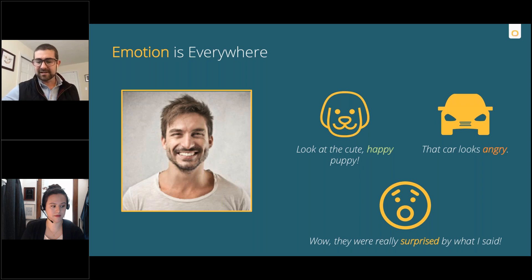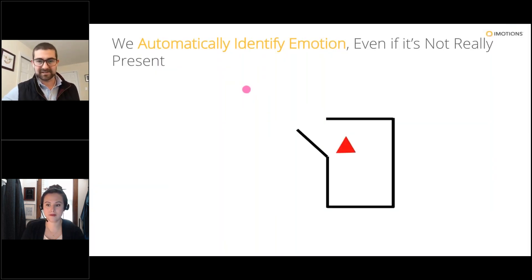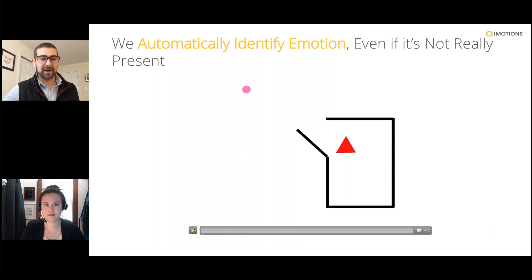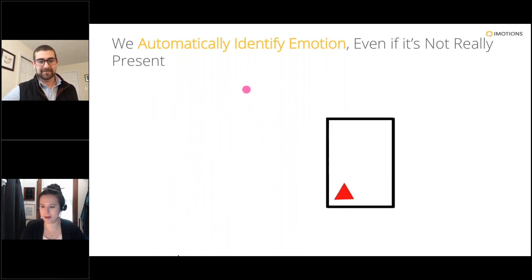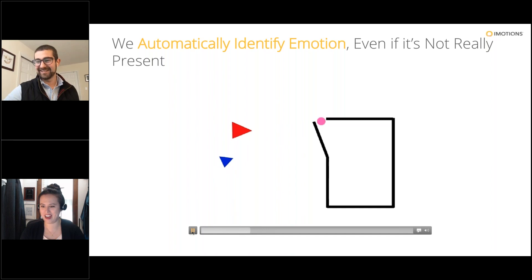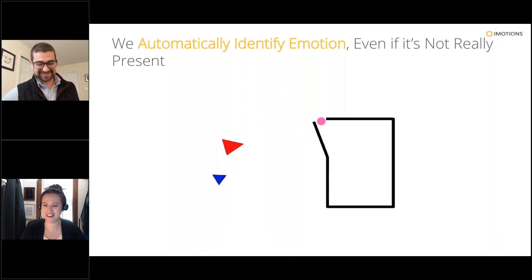We also do this automatically with very low-level stimuli. I'm going to show what's called the Heider-Simmel Illusion. Jessica, if you wouldn't mind narrating what it seems like is actually happening in this video. Jessica: So the red guy is trying to exit the box — it's trapped. The blue guy and the pink guy look like they're trying to help him get out. The blue guy is a lot more frantic, moving around really quickly, might be antagonizing the red guy. Looks like they might be fighting, and pink is hiding away.